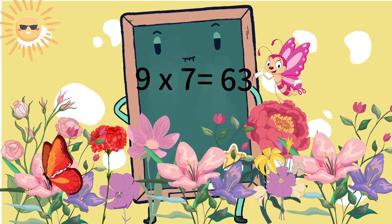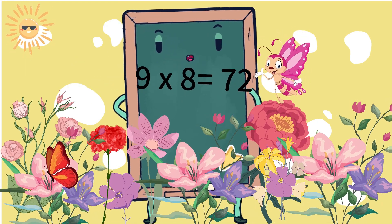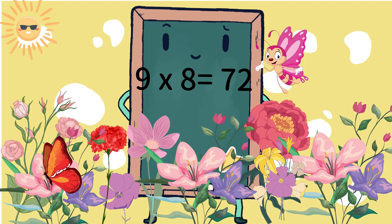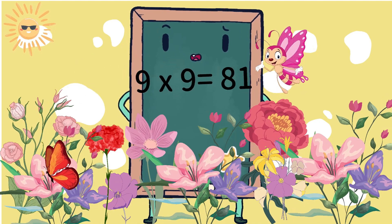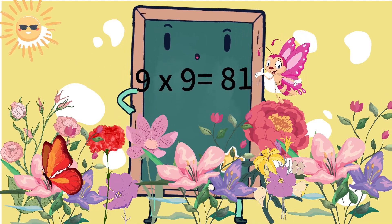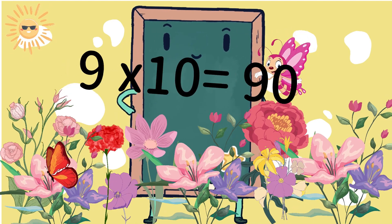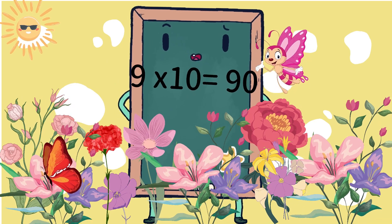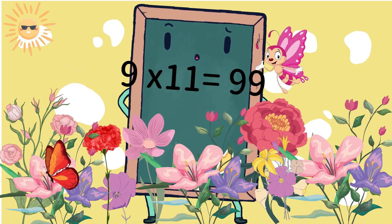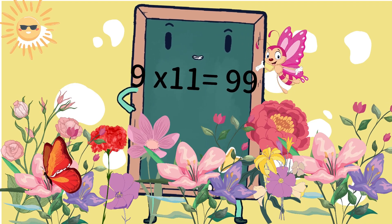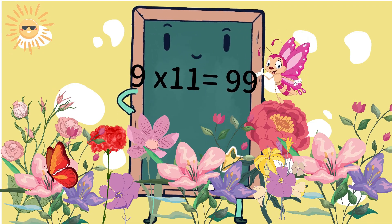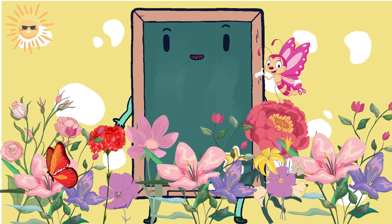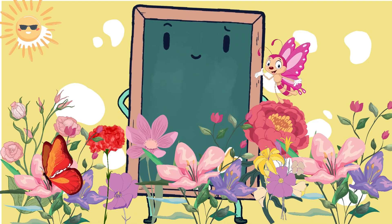9 × 8 = 72, 9 × 9 = 81, 9 × 10 = 90, 9 × 11 = 99, 9 × 12 = 108.